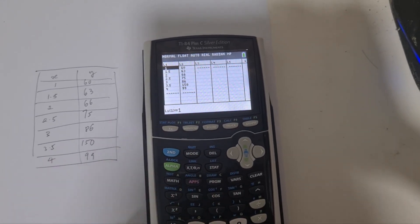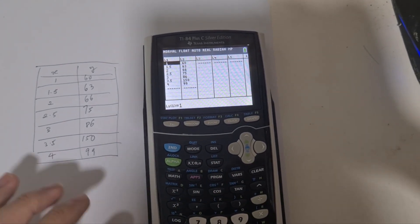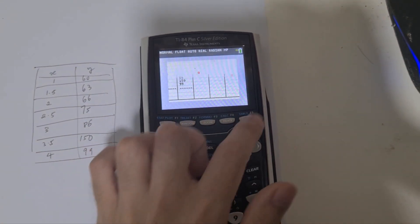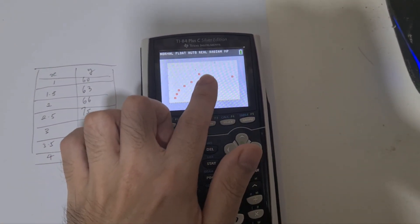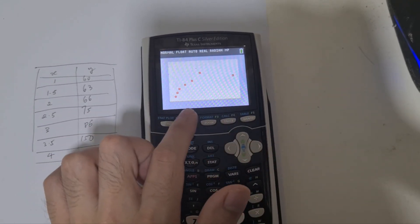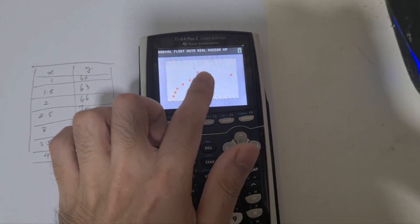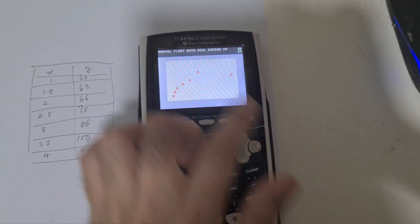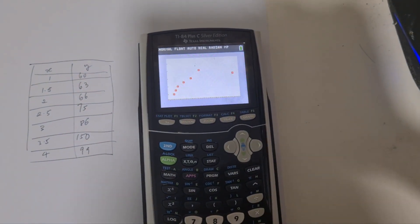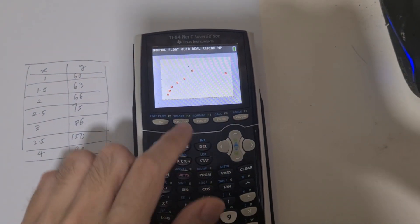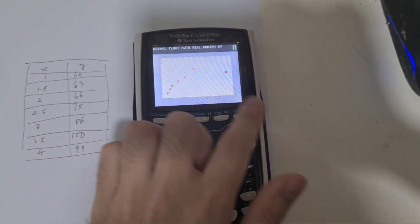The reason why we sometimes have to remove a pair of data: using this example, if we visualize this data, you can see that there's a particular point among the rest that is out of the trend, so it is considered an outlier. Sometimes the question will ask you to first remove this outlier before finding the regression line for the remaining points.